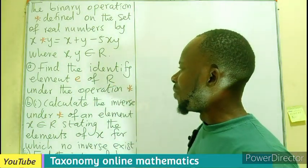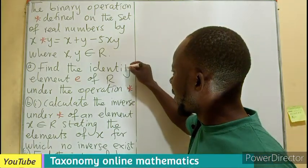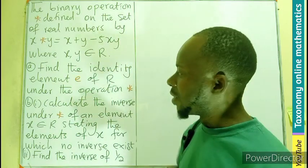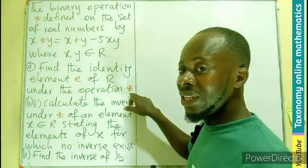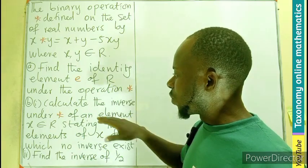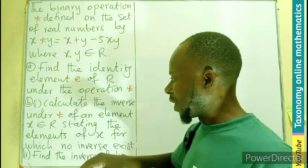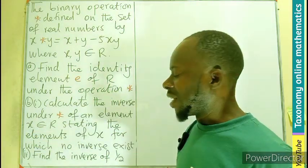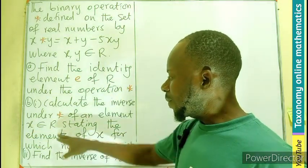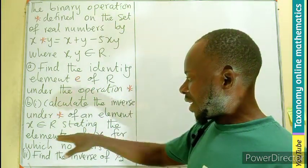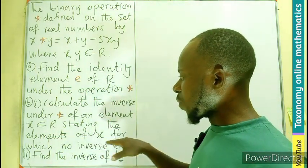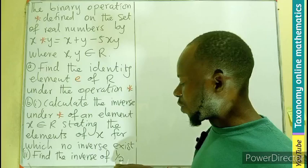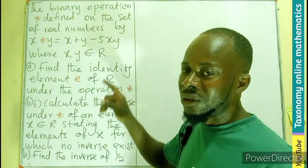So one, we have to find the identity element e of the real numbers under the operation star. Then two, we have to calculate the inverse of an element x belonging to the set of real numbers, stating the element of x for which no inverse exists. Then we have to find the inverse of half also using the operation.